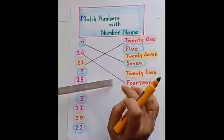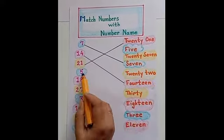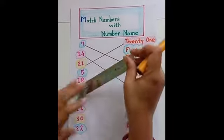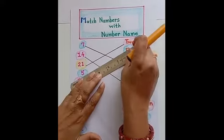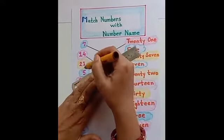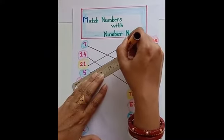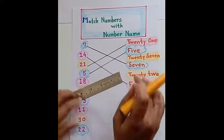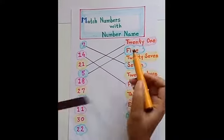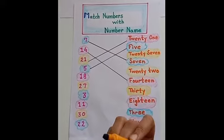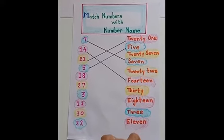Now next number is 5. Here it is. Let's match number 5 with its number name. F-I-V-E, 5.